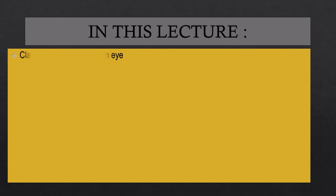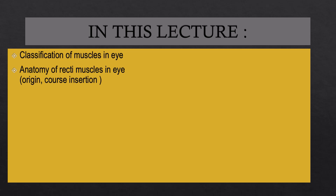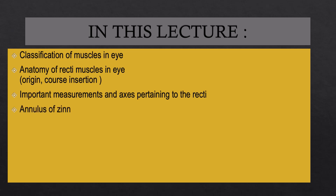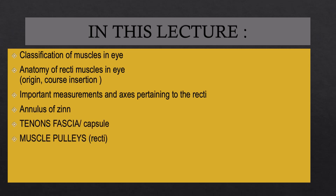In this first part, we shall be studying the classification of the various muscles of the eye, the anatomy of the rectus muscles including their origin, course, and insertion, the important measurements and axes pertaining to the rectus muscles, the annulus of Zinn, Tenon's fascia and capsule, the various muscle pulleys specific to the recti, the spiral of Tillaux, and finally the nerve and blood supply of the extraocular muscles.